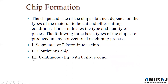There are three basic types of chips produced in conventional machining: first, segmented or discontinuous chips which are formed in separate parts; second, continuous chips which form in a continuous ribbon; and third, continuous chips with built-up edges, where some built-up edges are formed on the tool.